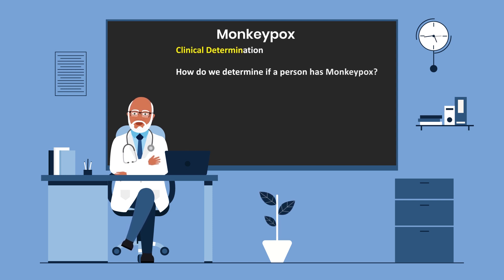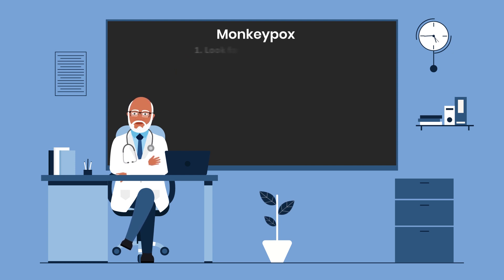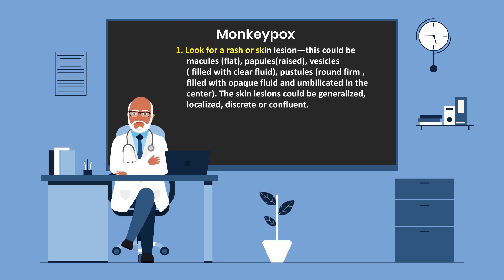Clinical determination: how do we determine if a person has monkeypox? Look for a rash or skin lesion. This could be macules, which are flat; papules, which are raised; vesicles, filled with clear fluid; or pustules, which are round and firm with opaque fluid and umbilicated in the center. The skin lesions could be generalized, localized, discreet, or confluent.